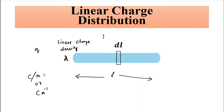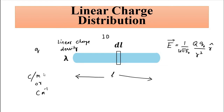In this one-dimensional case, the electric field is generally expressed as E = (1/4πε₀) × (Q/r²) r̂, where Q is the source charge and r̂ is the unit vector. However, for a continuous charge distribution this expression will be modified.